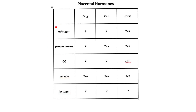Steroids can be made by the placenta — estrogen and progesterone are steroid hormones. For estrogen, there's a question mark for dogs and cats — maybe unknown or not enough information — but yes, the horse placenta does make estrogen. For progesterone, the name means progestational, meaning it promotes pregnancy. It's a little iffy in the dog, seems to be coming from the placenta in the cat, and definitely in the horse. But remember, a lot of progesterone is also coming from the CL of the ovary.